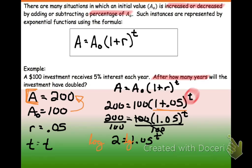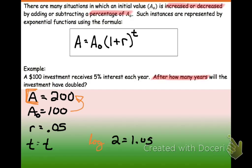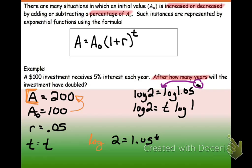So we have 2 equals 1.05 to the t power. And this is where we want to go ahead and take the log of both sides. So log here, and log here. And what we'll be left with is, I'm going to run out of room. See if I can fit it over here. We'll be left with log of 2 equals log of 1.05 to the t. We can use our power property to bring this down in front. So we have log of 2 equals t log of 1.05.